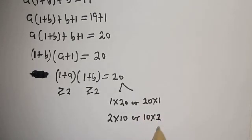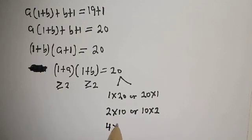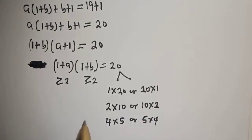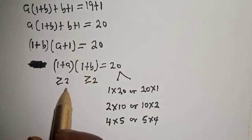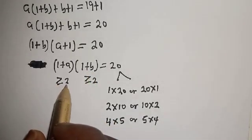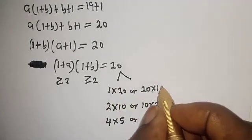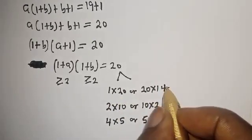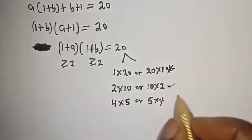But since 1 + A and 1 + B must be greater than or equal to 2, we can eliminate the 1×20 case. So we consider the second case and the third case.